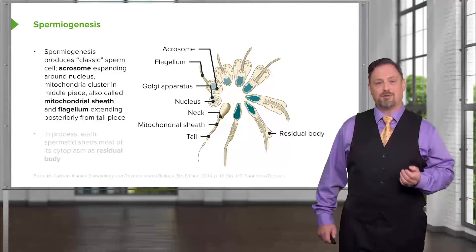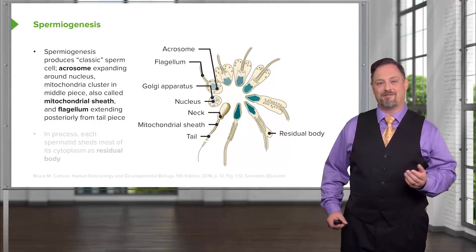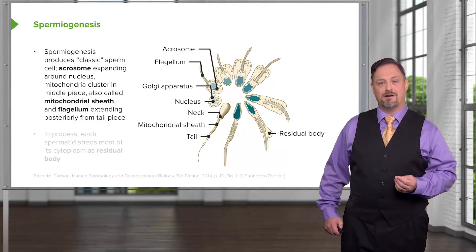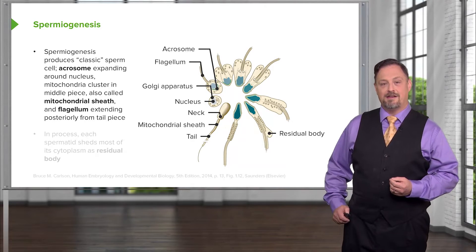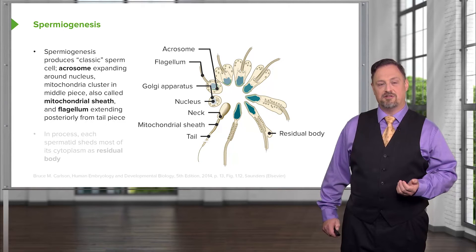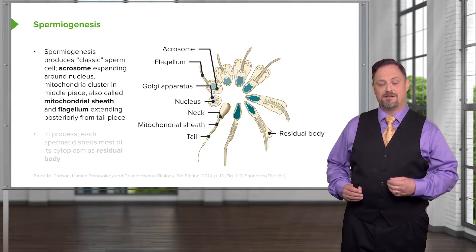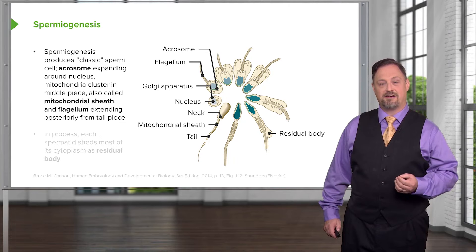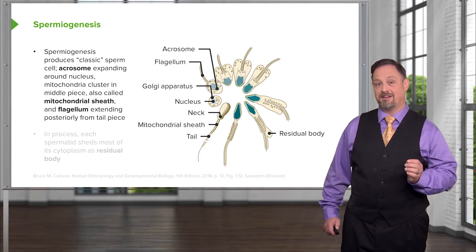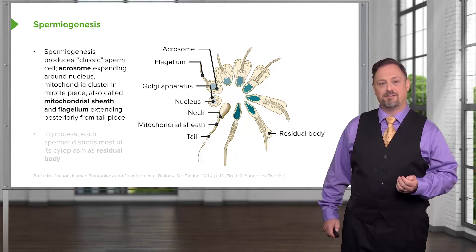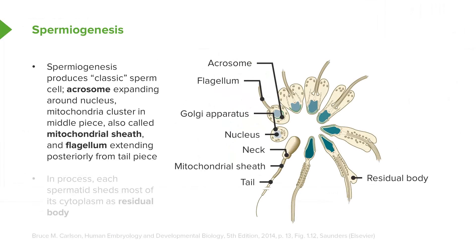In the process of spermiogenesis, we get the classic appearance of spermatozoa. The cell will extend a flagellum off the back, and in front of the nucleus the acrosome will form, which allows it to penetrate the protective layer around the egg and actually get to the egg's plasma membrane to fertilize it. As this is occurring, cytoplasm is being shed from the spermatid and its mitochondria become concentrated in a mitochondrial sheath around its mid-piece.